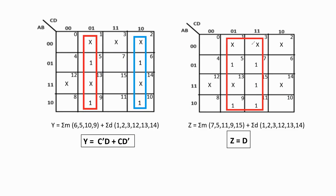For Z, the ones and don't cares form one group. This group lies in all rows (so A, B are skipped) and vertically in the middle two columns (C varies 0 and 1, so C is skipped), while D=1 in both columns. Therefore Z = D. Based on these boolean functions W = AB + AC'D', X = BC'D' + B'D + B'C, Y = C XOR D, and Z = D, we develop the circuit diagram.